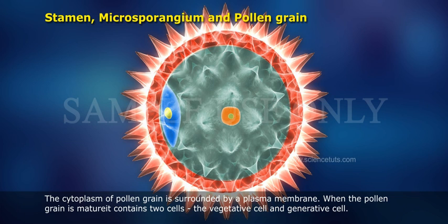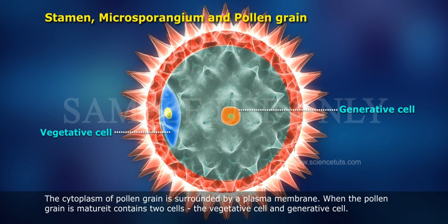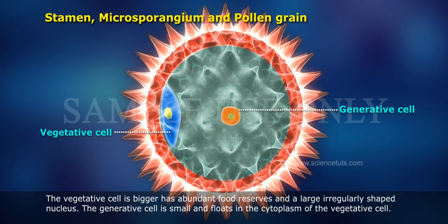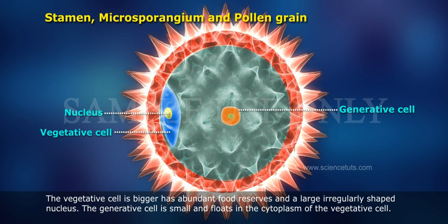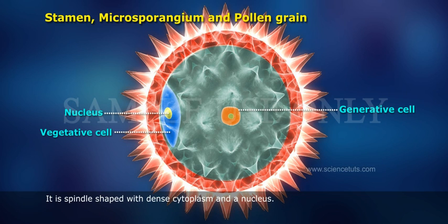When the pollen grain is mature, it contains two cells: the vegetative cell and the generative cell. The vegetative cell is bigger, has abundant food reserves and a large irregularly shaped nucleus. The generative cell is small and floats in the cytoplasm of the vegetative cell. It is spindle-shaped with dense cytoplasm and a nucleus.